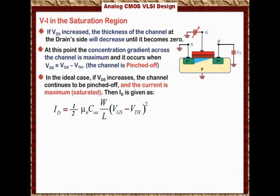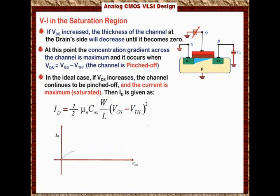Let us show you what happens to the voltage-current relationship on the graph. We're going to plot Vds versus Id. Here is the Vds axis and here is the Id axis. Starting with one value of Vgs above the threshold voltage — meaning the transistor is conducting — by increasing Vds from 0, we start in the linear region until Vds equals Vgs minus the threshold voltage. If Vds is increased more, we reach saturation and the current stays flat. Nothing happens to the current, giving us this curve for Vgs1.